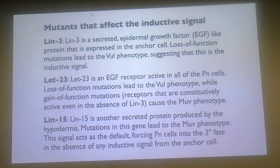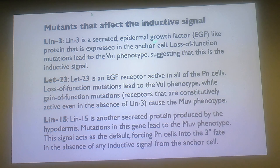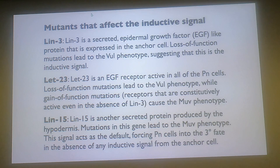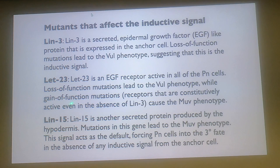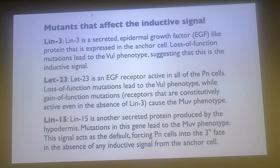Now, if you know anything about cell signaling, it's not enough just to have a signal - you also have to have a receptor, something that reads that signal. This is LET-23, an EGF receptor. LIN-3 is an EGF-like protein, and LET-23 is the EGF receptor that is switched on in all of the P cells. So if you have loss-of-function mutations of this - if the cells are no longer receptive to the signal - then you get the vulvaless phenotype: they're being told to make a vulva but they can't hear it. There are also gain-of-function mutations that make these genes constitutively active, carrying a mutation that makes them think they're constantly bound to LIN-3, and there you get the multivulva phenotype.